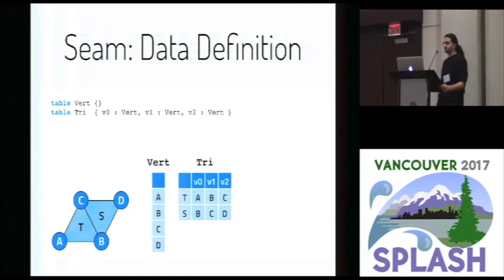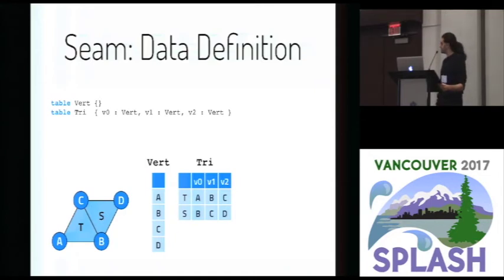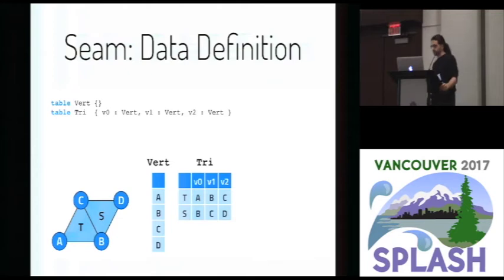In SIEM, data structures are represented as relational tables. For our edge collapse example, we would have a table for vertices and a table for triangles. In those tables, the rows are elements, the columns are fields, and pointers are replaced by row identifiers. I'm showing a simple mesh and how it's encoded as these tables.